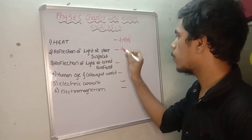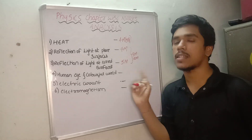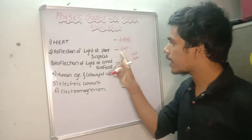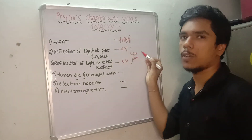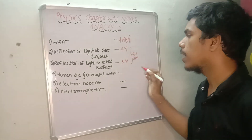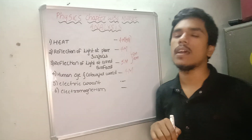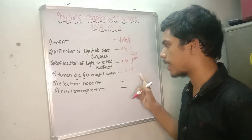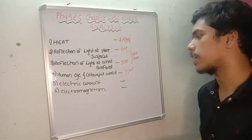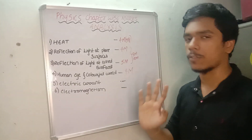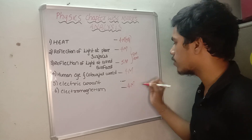So 4 marks and 5 marks are done, giving 9 to 10 marks total for the reflection chapters. Next, human eye and colourful world has 4 marks every year — you will get those 4 marks every year. And next, electromagnetism and electric current also carry a maximum of 4 marks every year.